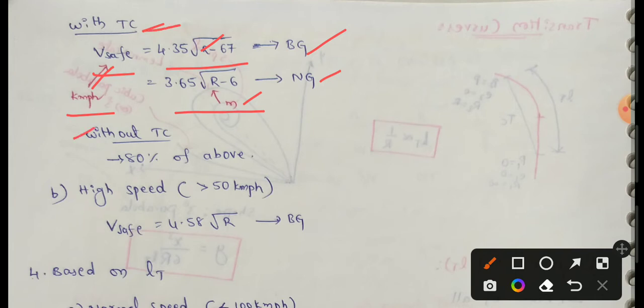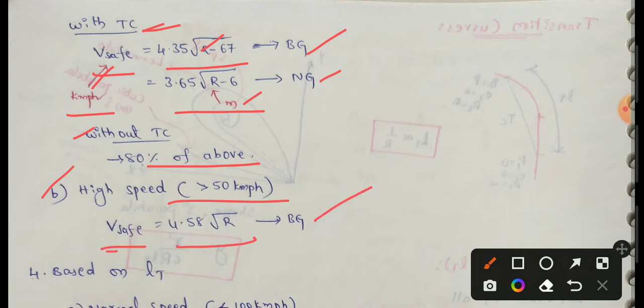Safe speed is approximately 90 km/h. Next, for high speed — where speed is greater than 50 km/h — safe speed is equal to 4.58 into root of R. This broad gauge formula is used in this case.